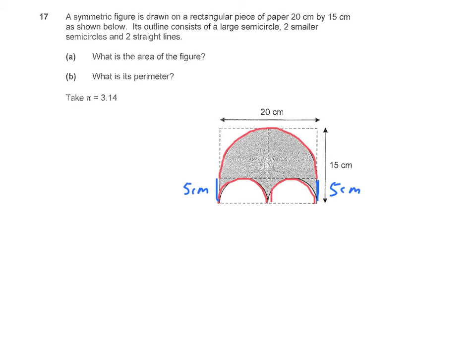What is the circumference of this half semicircle? It will be half times pi, which is 3.14 times the diameter, which is 20. So that will give us 31.4cm.